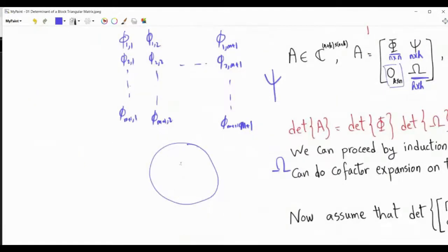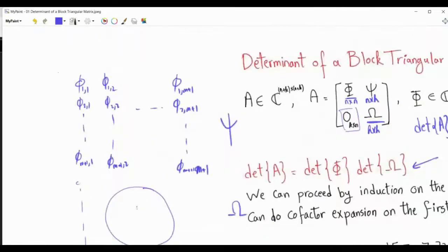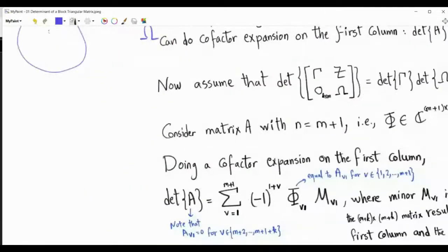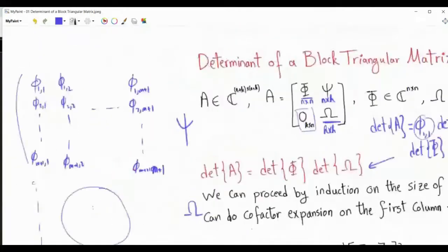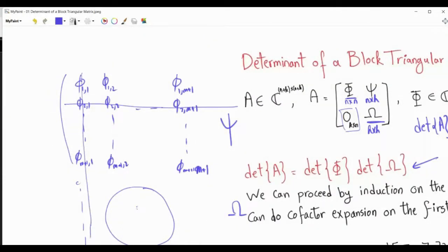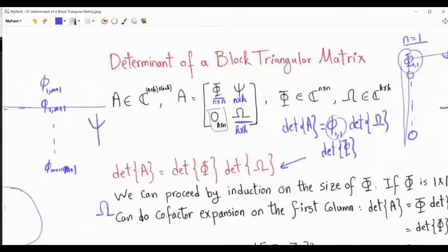Note that the first column has zeros from the block zero matrix, so the summation has m+1 terms. With summation index v, we get: sum of (-1)^{v+1} × φ_{v1} × minor M_{v1}. Minor M_{v1} is obtained by eliminating the v-th row and first column from A and taking the determinant of the remaining matrix. That remaining matrix is upper block triangular, with the remaining part of φ being m by m. By the induction assumption, this minor's determinant can be computed.